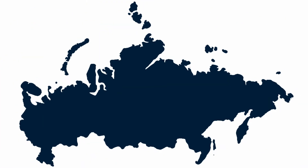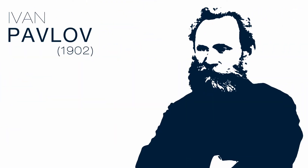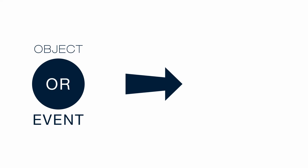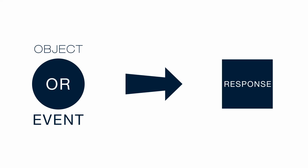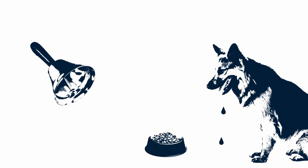Originating from work carried out by Russian psychologist Ivan Pavlov in 1902, it was found that an object or an event could trigger a certain response. He was able to show this by ringing a bell when a dog was being fed to create the response of salivation. By repeating this process, the dog associated the bell with the food, which made the dog begin to salivate when the bell was being rung as it expected to be presented with the food.